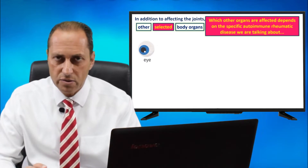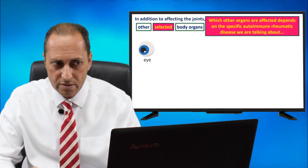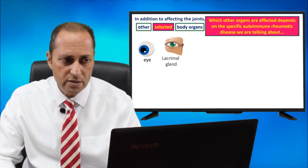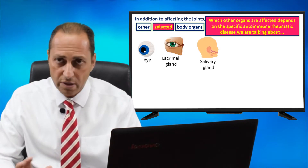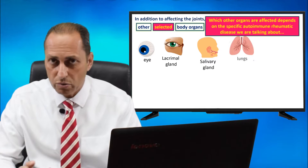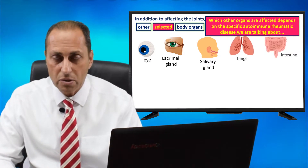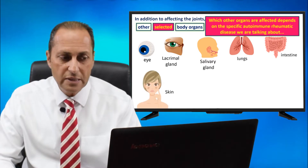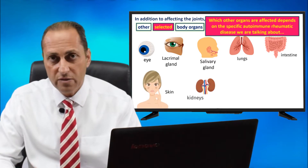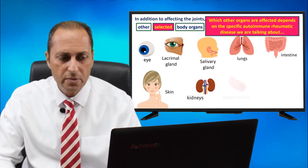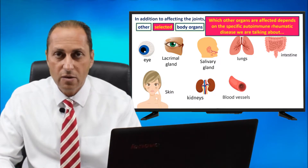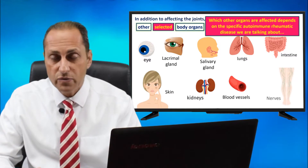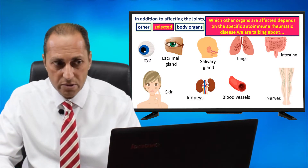They can affect the eye causing inflammation, the lacrimal gland causing dryness of the eyes, the salivary gland causing dryness of the mouth, the lungs causing shortness of breath, the intestine causing colitis and bloody diarrhea, different types of skin rashes, the kidneys causing impairment of kidney function and maybe elevated blood pressure, blood vessels causing lessening of blood flow to organs, and nerves causing neuritis, neuropathy, and numbness.